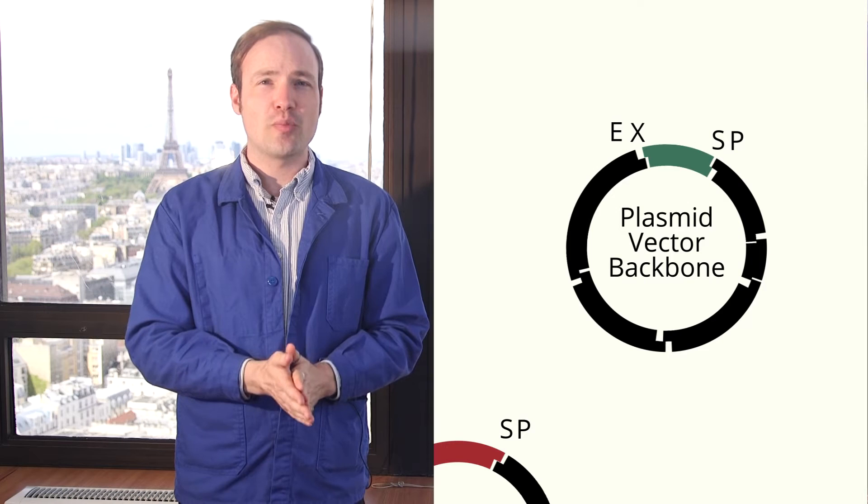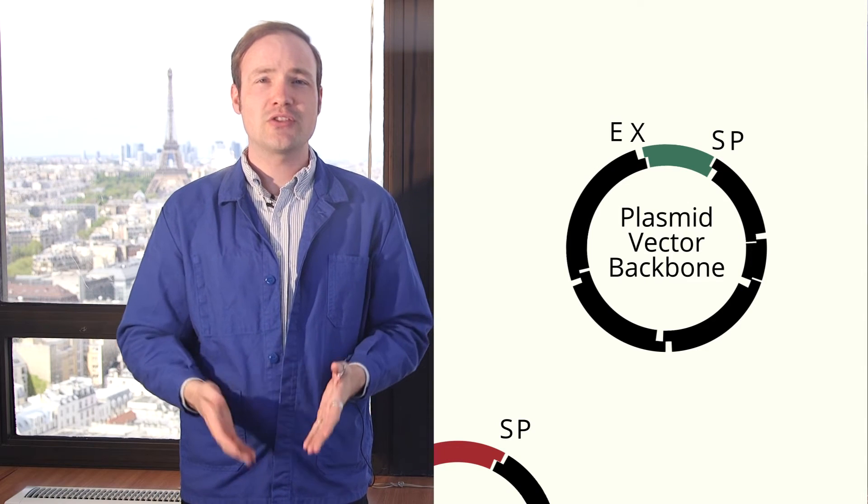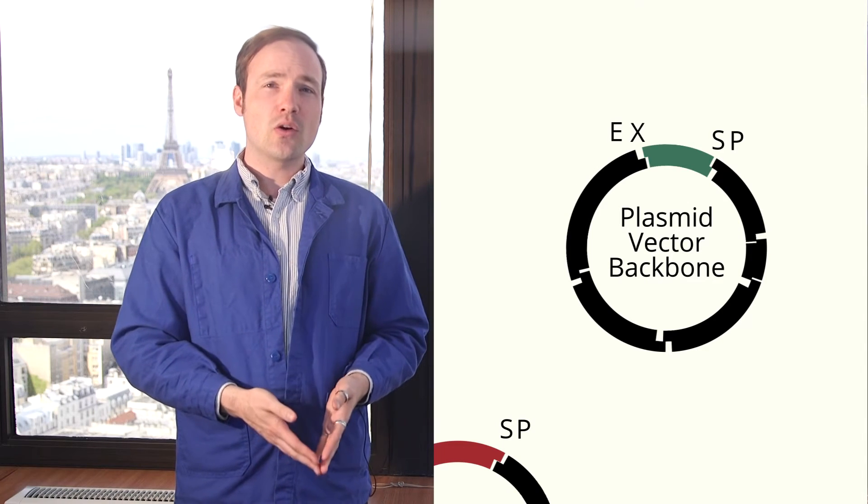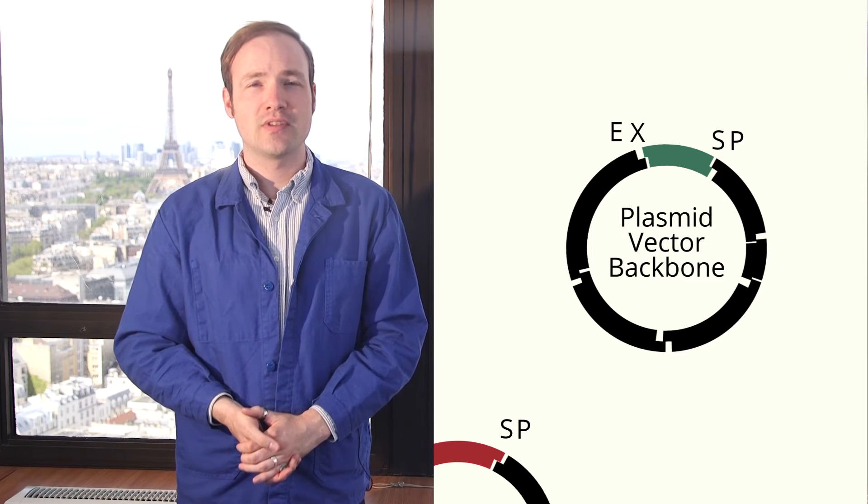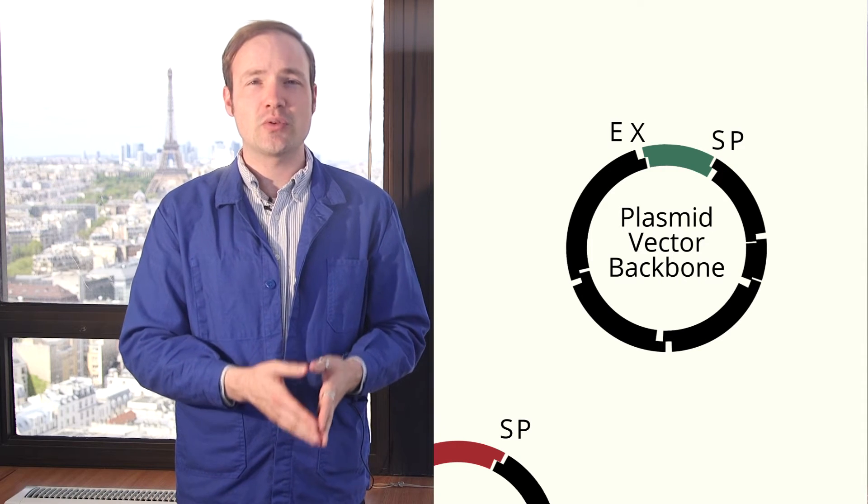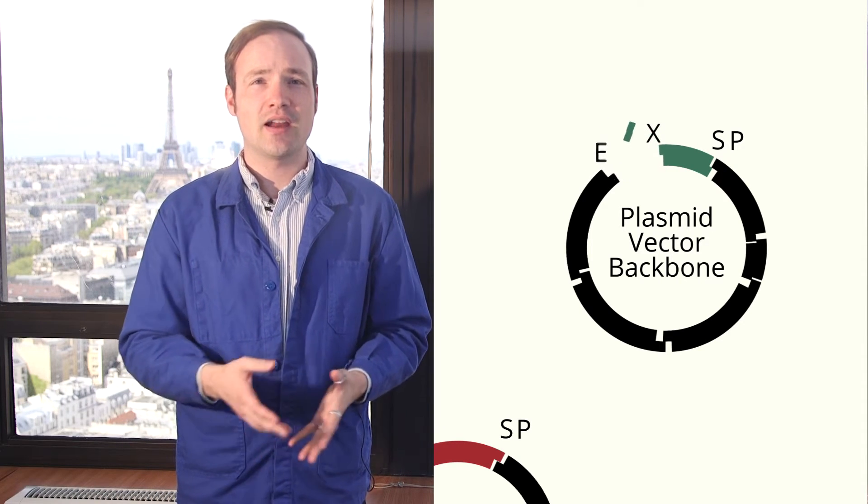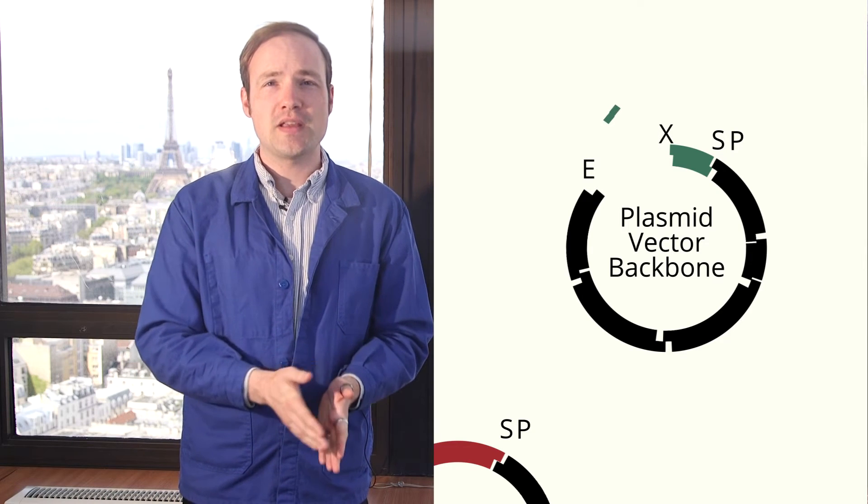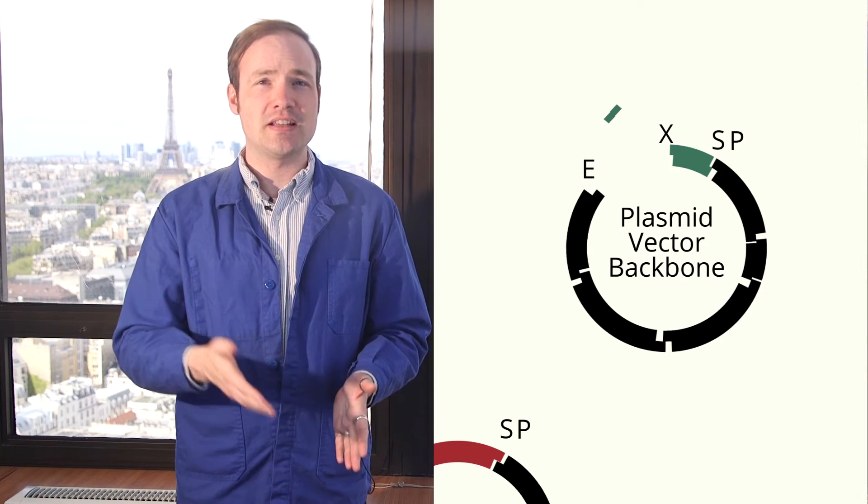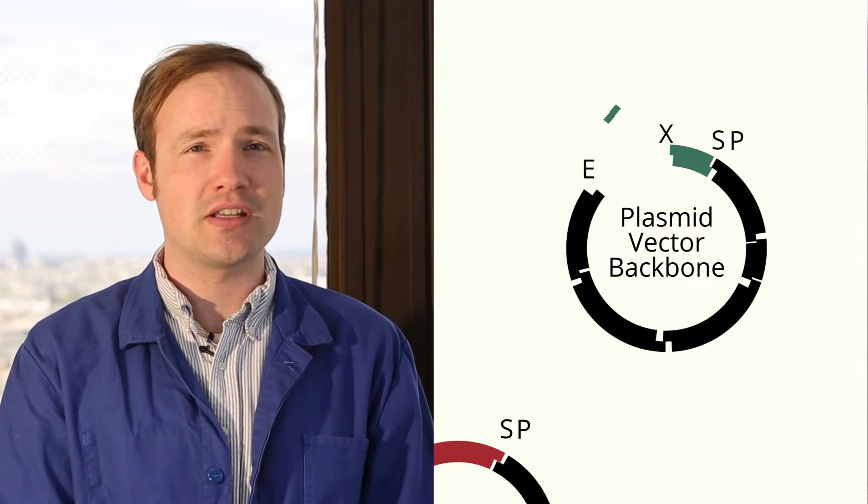Let's get started by cutting open the vector backbone. For this, we'll use two enzymes, EcoR1 and XbaI. EcoR1 cuts at the sequence GAATTC and leaves a specific sticky end. XbaI cuts at the sequence TCTAGA and leaves a different sticky end.